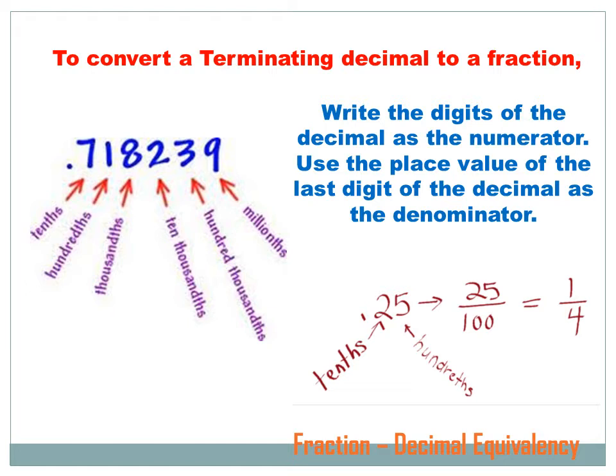Thousandths is one more zero. Now, if we remember the place value, then it's real easy to convert a decimal into a fraction. First, we write the digits of the decimal as the numerator of the fraction. And then we use the place value of the last digit of the decimal as the denominator.